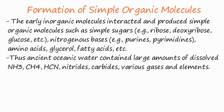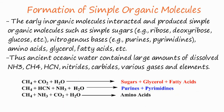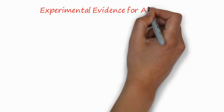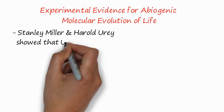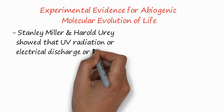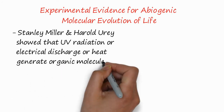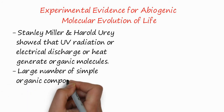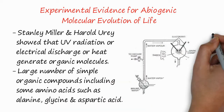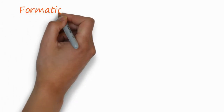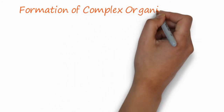You can see in this reaction that carbon dioxide combined with ammonia and water to produce amino acids. These were the supposed preliminary reactions. Now, the experimental evidence for abiogenic molecular evolution: the experiment of Stanley Miller and Harold Urey showed that UV radiation, electrical discharge, or heat can generate organic molecules. Large numbers of simple organic compounds, including some amino acids such as alanine, glycine, and aspartic acid, were produced. You can see in this picture the diagram of the Miller-Urey experiment.